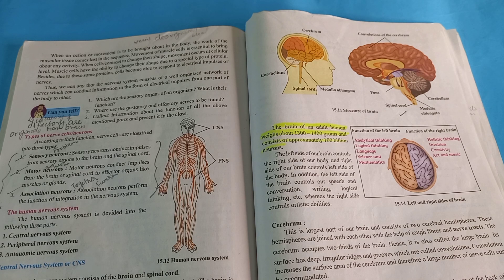In addition, the left side of the brain controls our speech, conversation, writing, logical thinking, etc., whereas the right side controls artistic abilities.